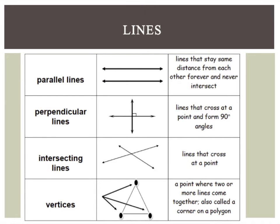Next, we have perpendicular lines. Perpendicular lines are two lines that cross at a point and form 90-degree angles. So, it's a perfect intersection of lines that forms some 90-degree angles in the corners.